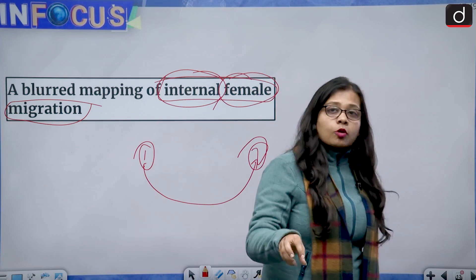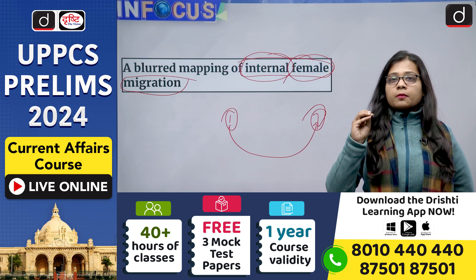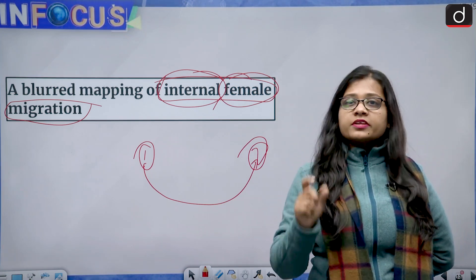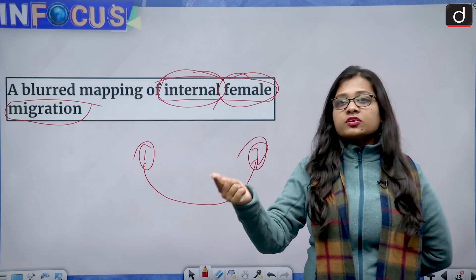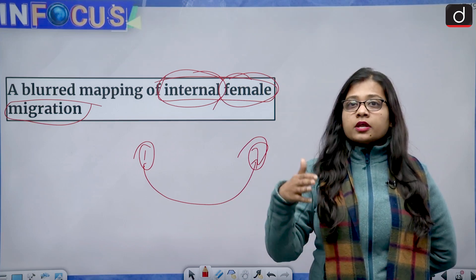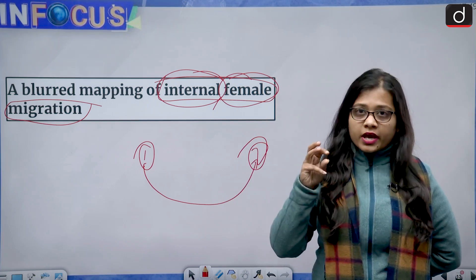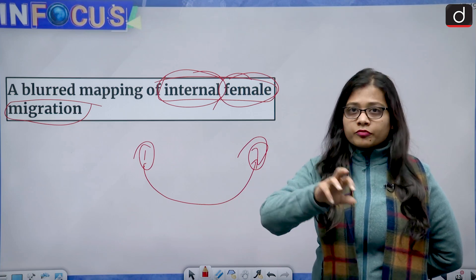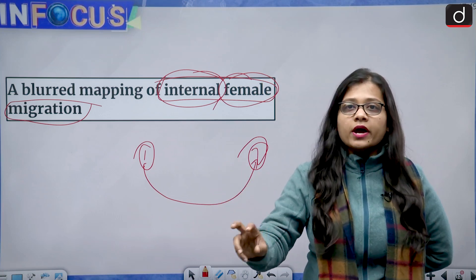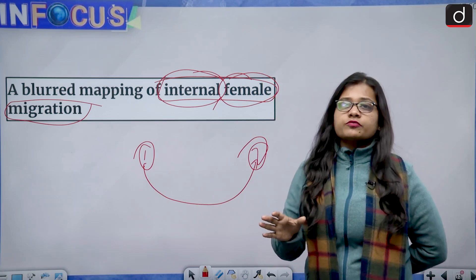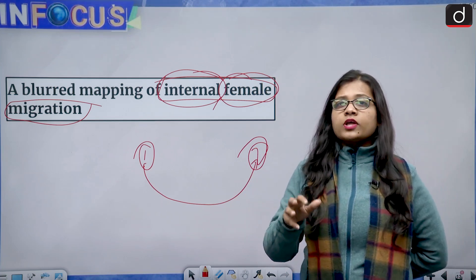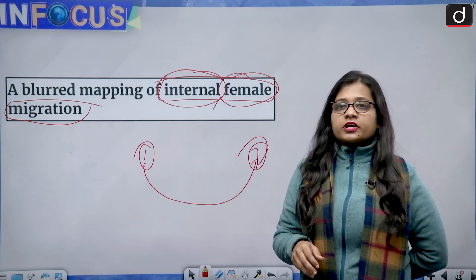A major problem is that women in our country are not much a part of the formal sector. Women's participation is high in the informal sector or family businesses. Especially in the rural economy, female labor force participation is very high in agriculture, where disguised unemployment is also very high — many family members working in a place where that many people are not even required. The Periodic Labor Force Survey looks at employment and unemployment at a given period of time.